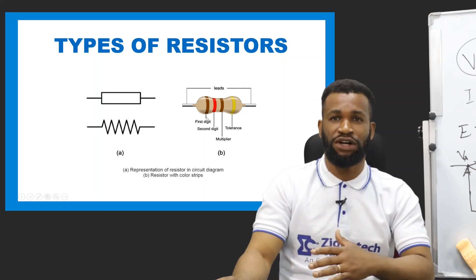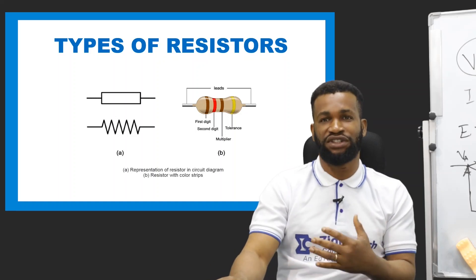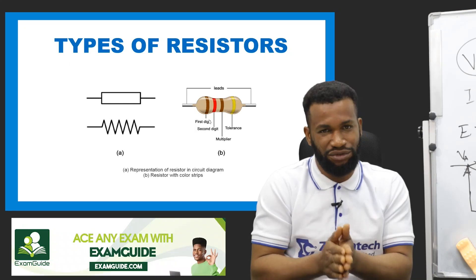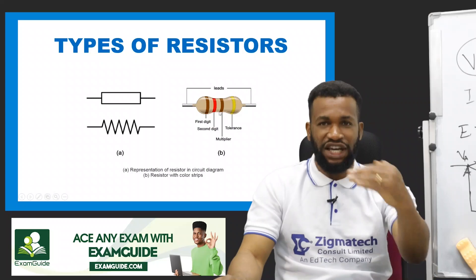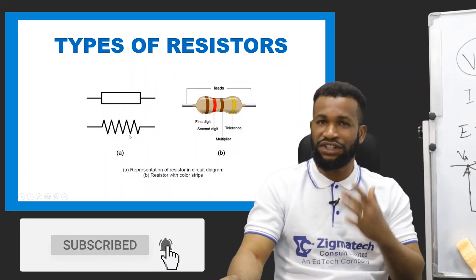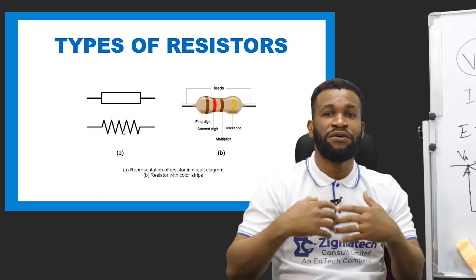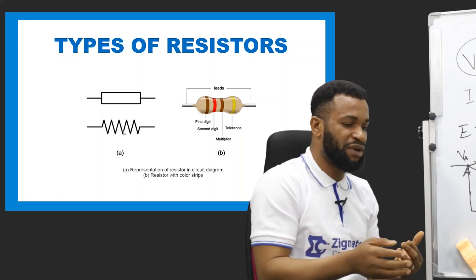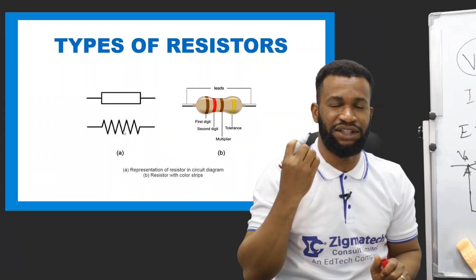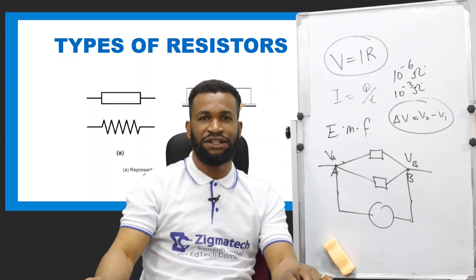If you go to a technician with a problem with your television and one component has failed, they will measure the value of the resistor, and knowing the color code tells you the value needed. But for the sake of your books, fixed resistors have fixed values. For example, we can have a 5 ohm or 2 ohm resistor. Sometimes you can have 5 micro-ohm (10 to the power of minus 6 ohms) or milli-ohm (10 to the power of minus 3 ohms).